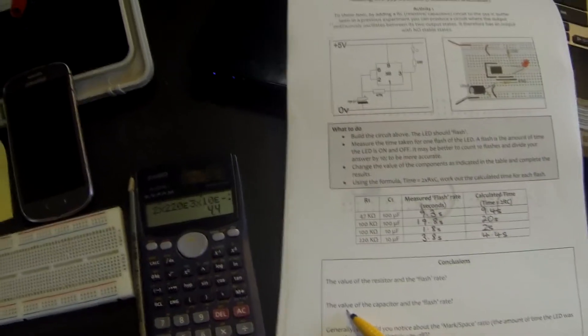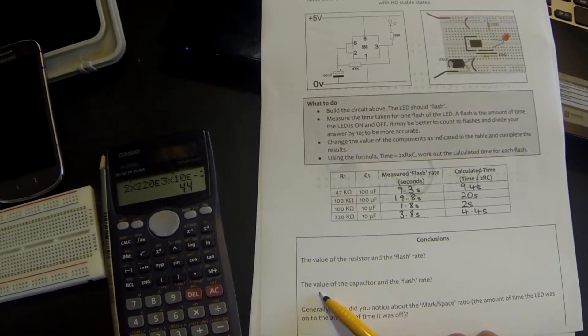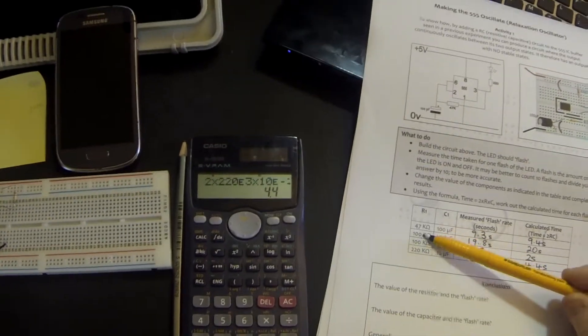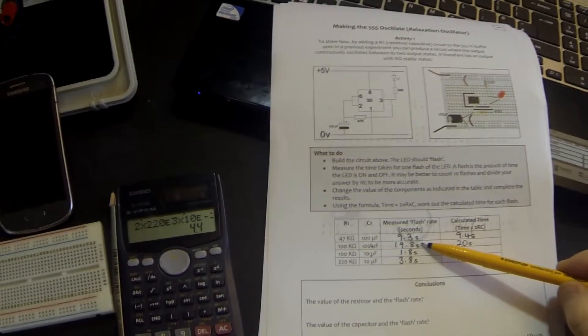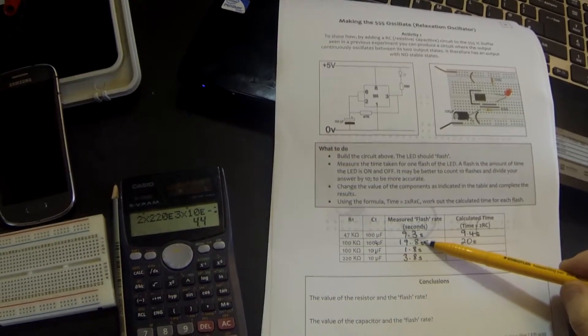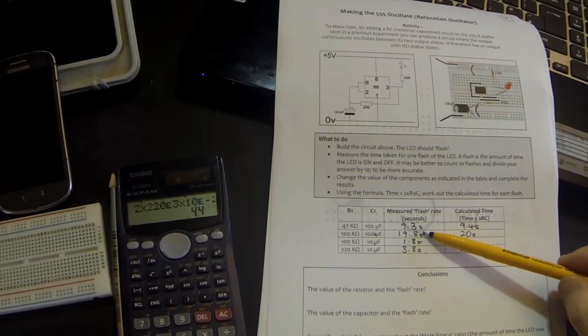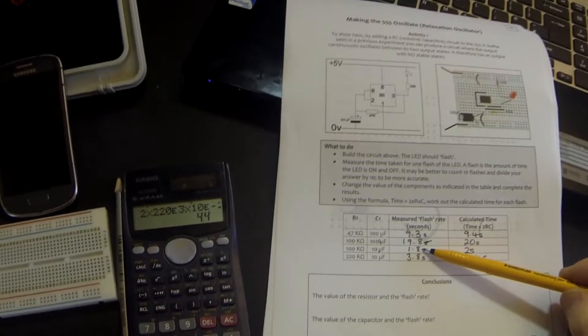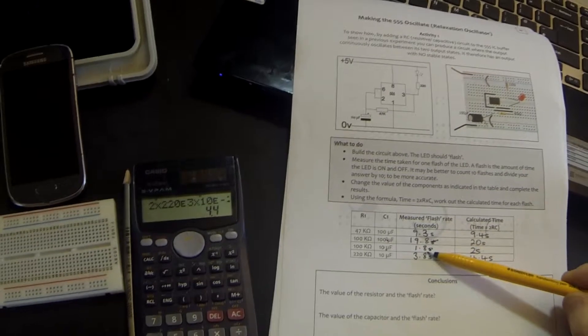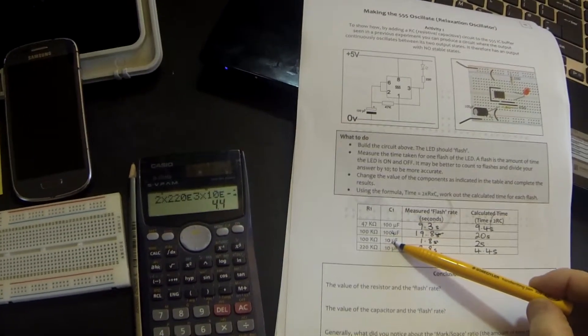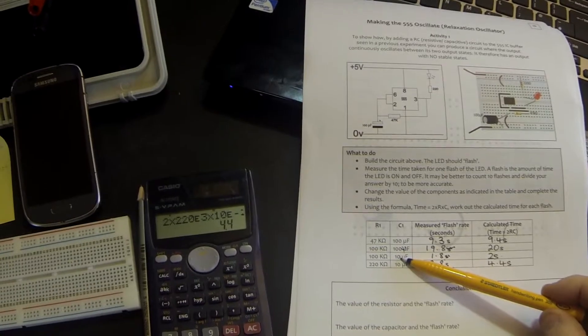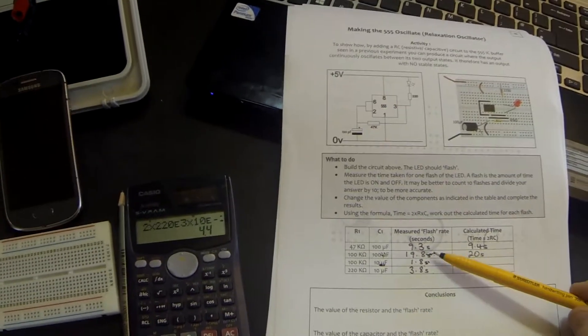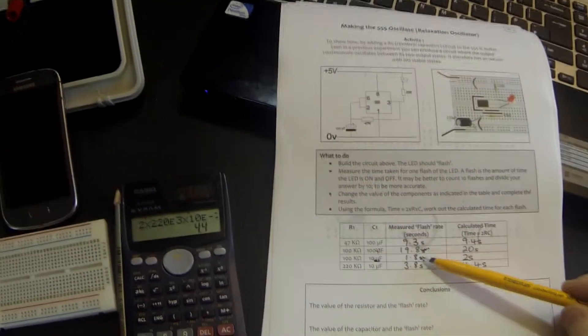What happens to the flash rate when we change the value of the capacitor? Well, it was only here that we changed the value of the capacitor, but kept the value of the resistor the same. So, here the value of the capacitor has gone from 100 microfarads to 10 microfarads. And here, our flash rate changed from 19.8 seconds to 1.8. In other words, the amount of time it took to come on and go off changed from 19.8 to 1.8. That is about a tenth of that value. And you will notice that the value of the capacitor was a tenth the value of the previous one. So, if we decrease the value of the capacitor, we change the rate at which the time the LED is on. I.e., we increase its flash rate, make it quicker.